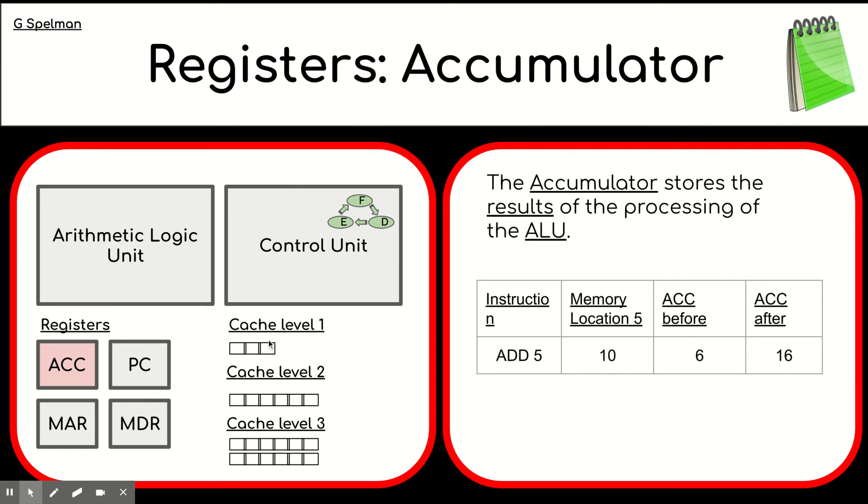Right. So on the registers, let's start with the accumulator. So the accumulator can contain a value. And if there is an instruction such as add five, what that means is add whatever is in memory location five to whatever is in the accumulator. So in this example,